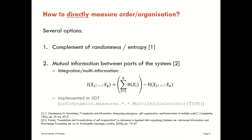The integration measure is implemented in the JRDT toolkit. You can find it by looking for the multi-info calculator in each of the estimator types. It's not implemented in our auto-analyser GUI, but you can see the usage pattern for it by looking at the usage patterns for the other measures that are there.